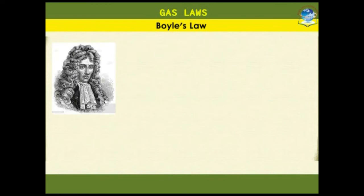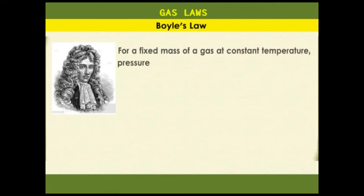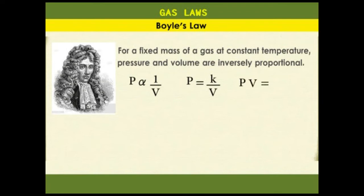A British scientist Robert Boyle stated this inverse relationship between pressure and volume as a gas law. Boyle's Law states that for a fixed mass of a gas at constant temperature, pressure and volume are inversely proportional. Mathematically, P is proportional to 1 over V. Introducing a constant: P equals k over V, where P is pressure, V is volume, and k is a constant of proportionality. We can rearrange this equation to read PV equals k, or the product of pressure and volume is a constant.